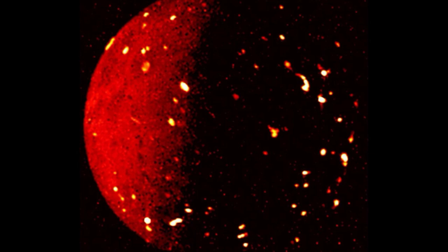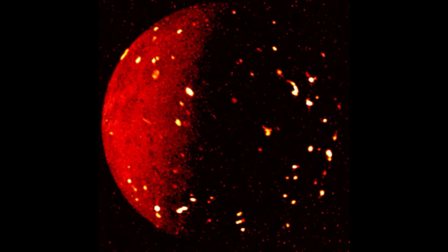The space probe Juno has been orbiting Jupiter since 2016. After studying the gas giant, Juno flew by Jupiter's moon Ganymede in 2021 and by Europa earlier this year.